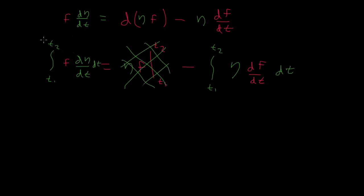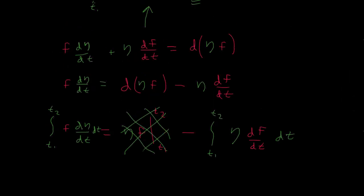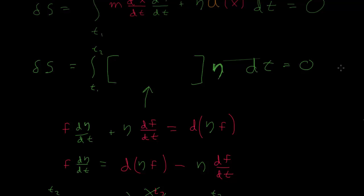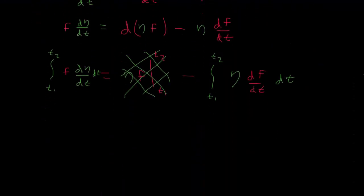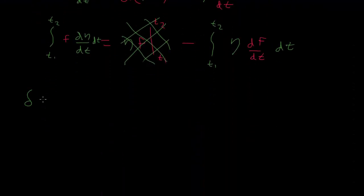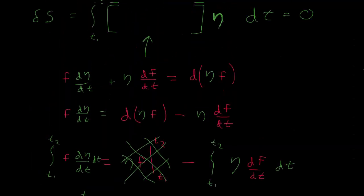So we can replace this integral of f times d eta dt over t with the integral of eta times the derivative of f with respect to t. So let's rewrite this integral. So we'll say this integral delta S, which equals zero, is equal, or we want to equal zero, is equal to the integral from t1 to t2 of this first thing here. Actually I'll forget about the etas and write them at the end, I'll multiply together.